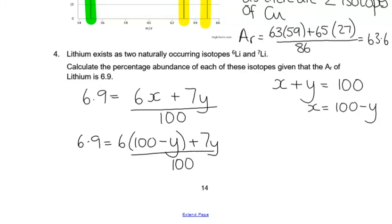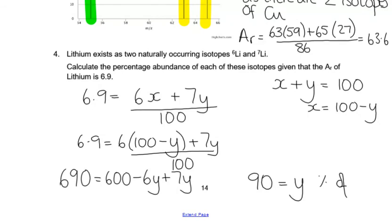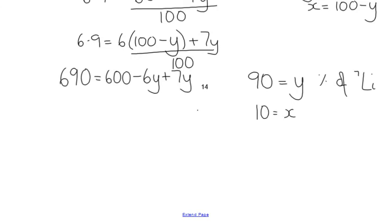So you could have 6.9 equals 6 brackets 100 minus y plus 7y over 100, and then do the algebra. I'm going to multiply both sides by 100. I'm going to get 690, and I'm going to expand my brackets. 6 times 100 is 600. 6 times minus y is minus 6y plus 7y. So 690 equals 600 minus 6y plus 7y. If I bring these two together, minus 6y and 7y, I'm going to get 1y. And if I take 600 away from each side, I'm going to get 90 equals y. And if that is our percentage of, for y was our 7Li, if that's our percentage of 7 lithium, then 10 must be equal to x, which is our percentage of lithium 6. So it was 10% and 90%.